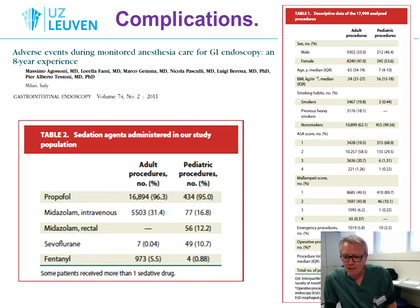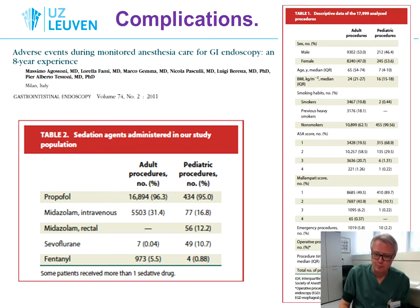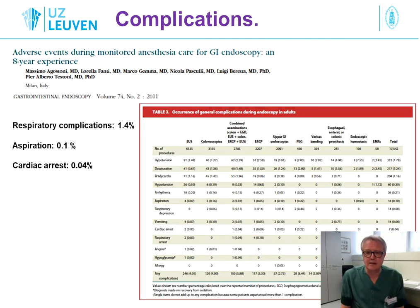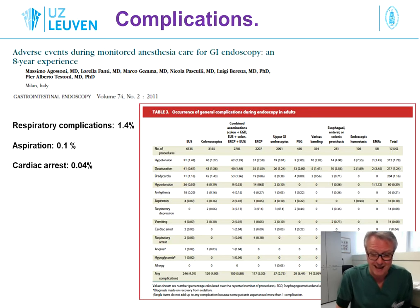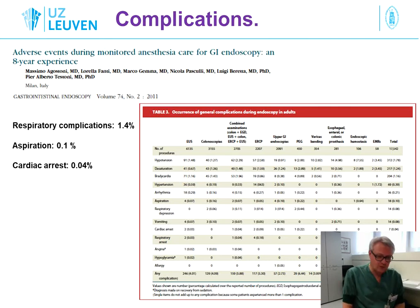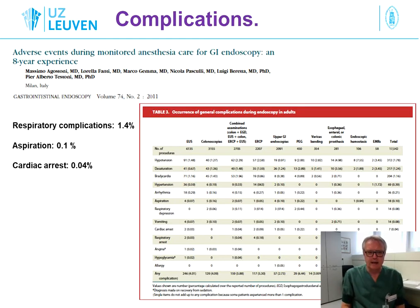So it's actually not a very high-risk population, but despite that, the risk of complications is certainly there. There is a risk of respiratory complications in 1.4%, a risk of aspiration of gastric contents in 0.1%, and a risk of cardiac arrest in 0.04%. With various drugs, there is a real risk of respiratory arrest, and you can find many other studies showing similar results.